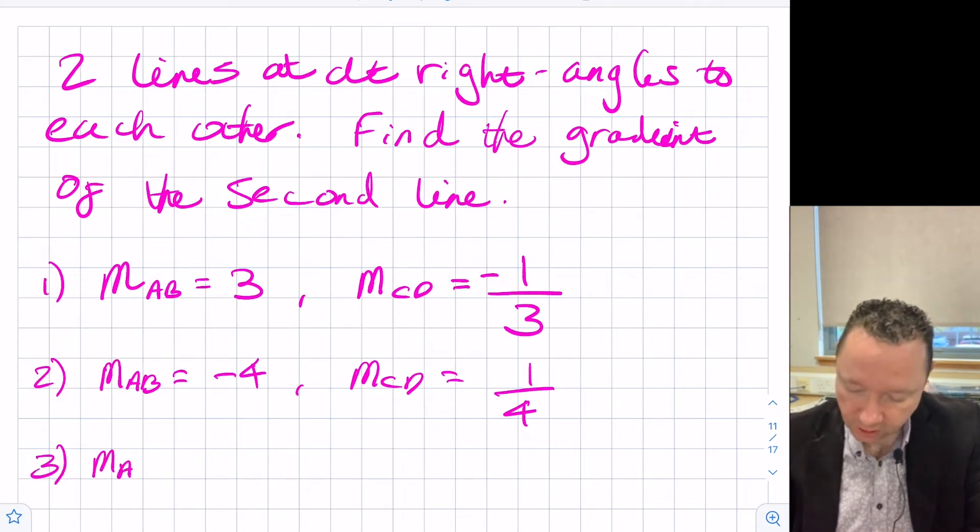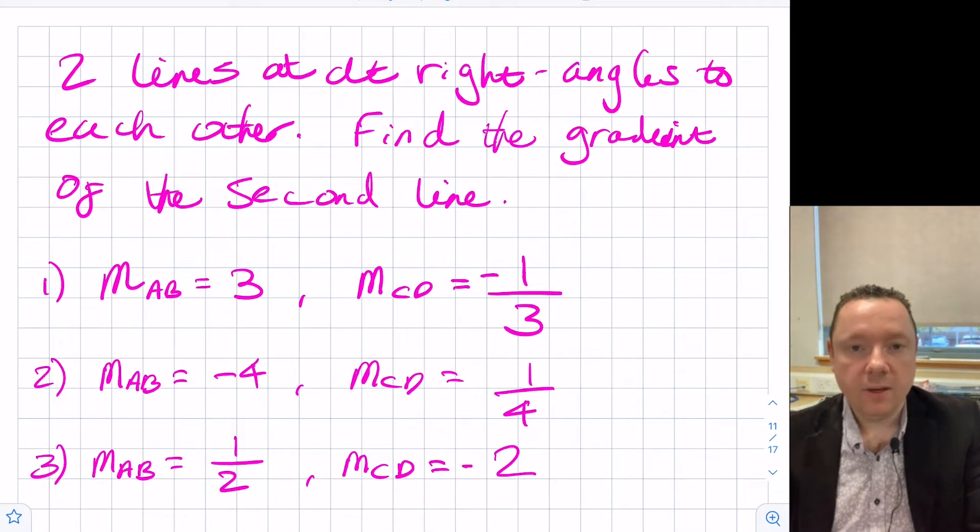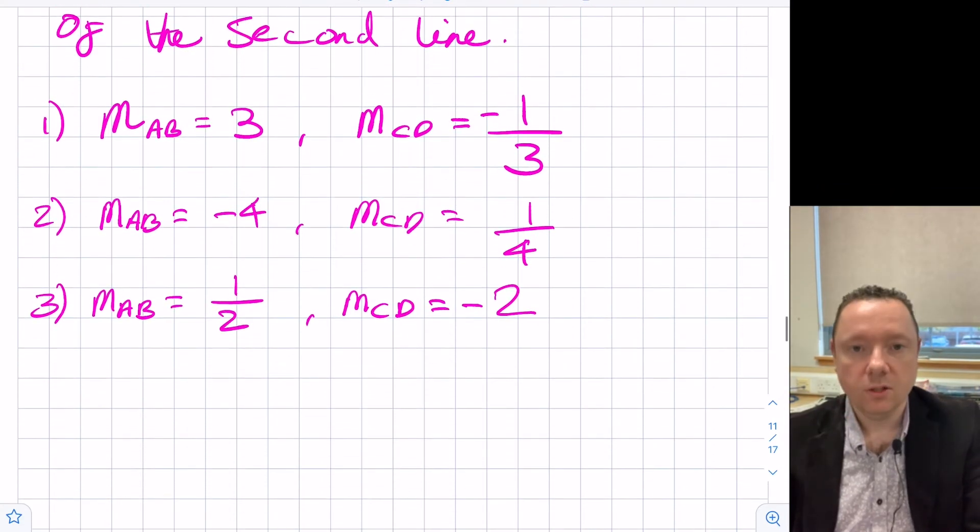If we start off with a fraction, let's say the gradient of AB was equal to a half, then the gradient of CD, a half becomes two, and minus. Minus two. These are called the negative reciprocals of each other. You times them together, you always get minus one.